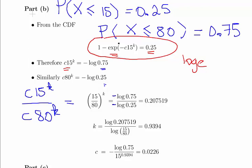We should have a minus sign on both sides, but that just cancels out. So overall, what we have here is 15 over 80 to the power of K. And that is equal to, if you work this expression out, you would get 0.207519.